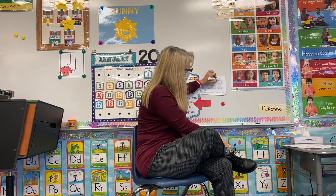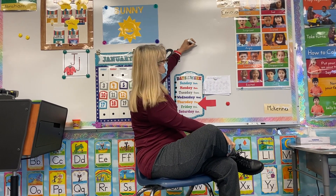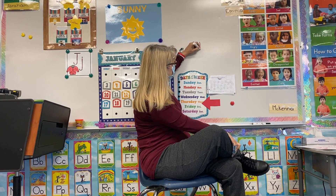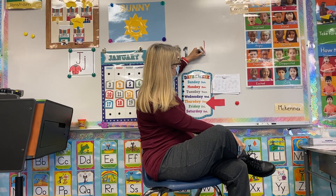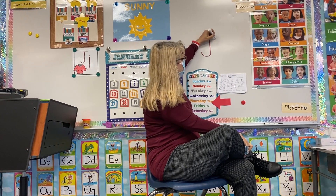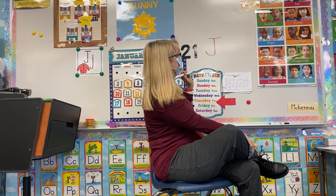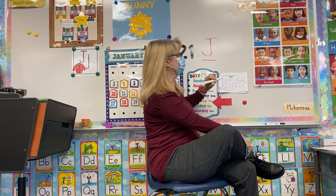So we're going to look for the uppercase J. Remember, the uppercase J is a big line down, a little curve around, and then a little line across the top. That is uppercase J.